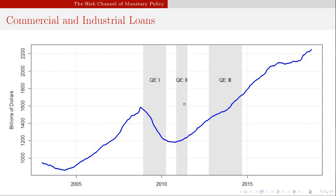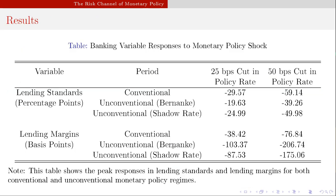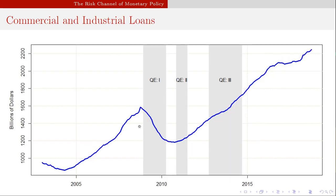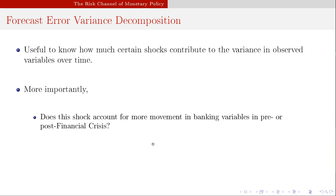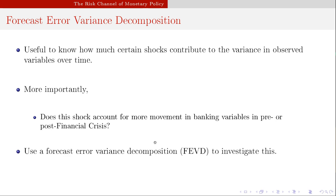Banks take less risk after the financial crisis than before, and because they're taking less risk they experience a much larger compression in lending margins. Looking at commercial and industrial loans from 2004 to 2018: there's a massive drop-off in C&I loans that doesn't pick up until the beginning of the second round of QE. This drop can be explained by the reduction in lending standards — banks are playing it safe, not lending to more people because credit worthiness issues needed to be reassessed. Using a forecast error variance decomposition, the risk channel explains about 20 percent of the variance in lending standards and 25 percent in lending margins for the unconventional shock.